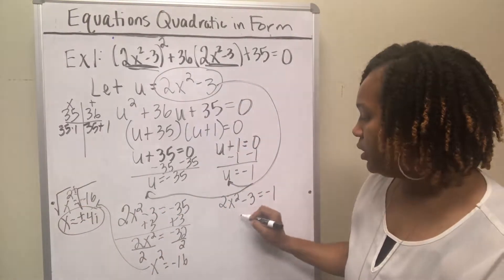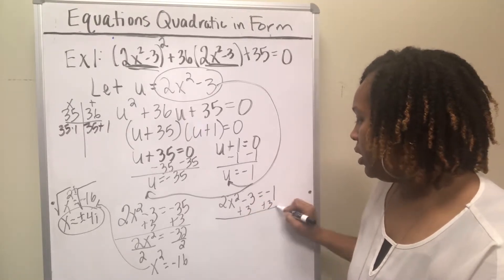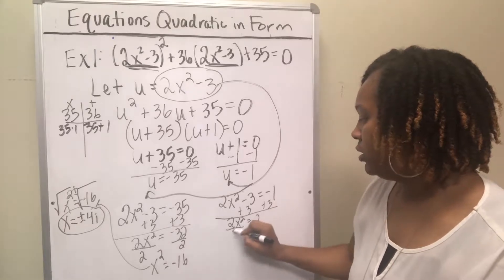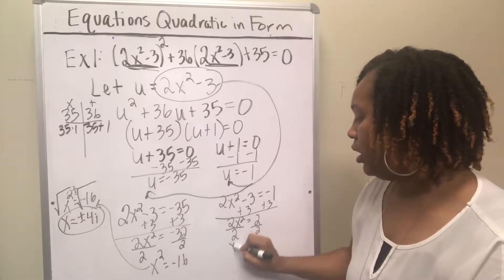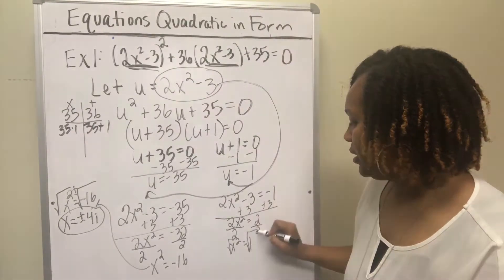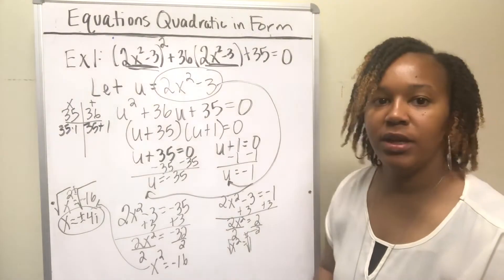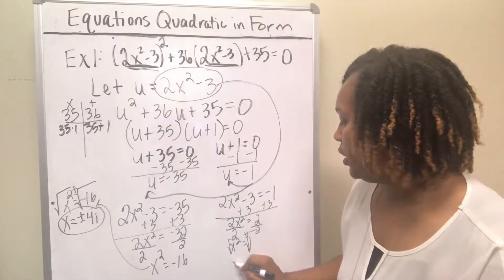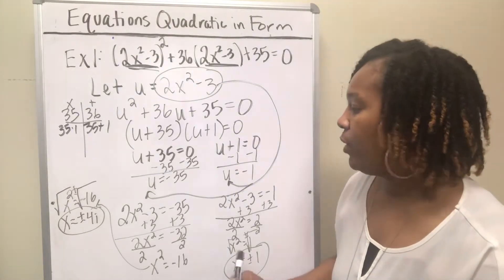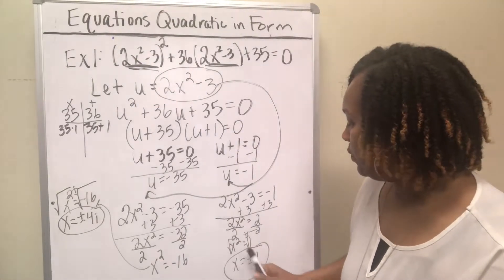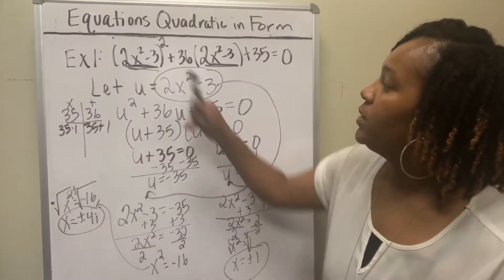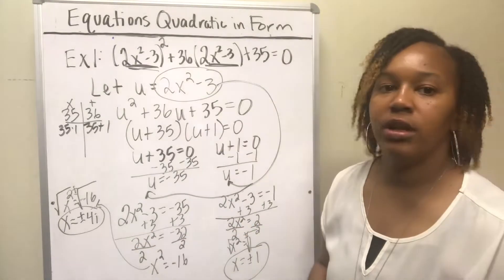Now let's work the other equation. Add 3 to both sides: 2x² = 2. Divide by 2: x² = 1. Take the square root of both sides — remember you have to take the positive and negative square root — so x = ±1. You get four answers total: positive 1, negative 1, positive 4i, and negative 4i. And so we've solved this equation that's quadratic in form.